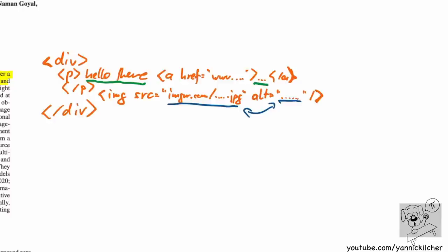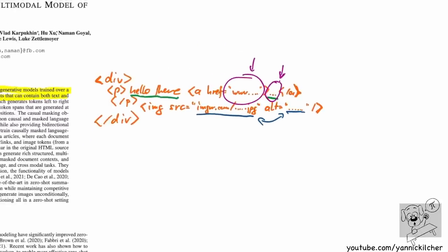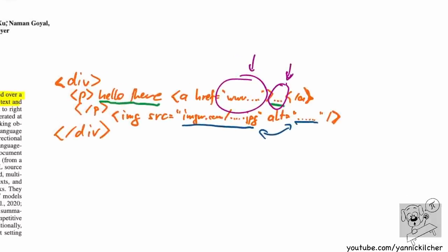For tasks like entity linking or entity disambiguation, what you would do is go to Wikipedia and take the text of a link and the link itself if it points to another Wikipedia article. For example, it says 'Romans were captured by Alexander the Great' - 'Alexander the Great' would be clickable and that link would tell you what entity it is, leading to the Wikipedia page of Alexander the Great. People have parsed websites in various ways to collect data for different tasks.